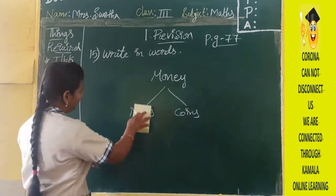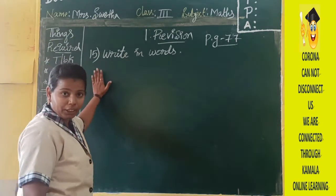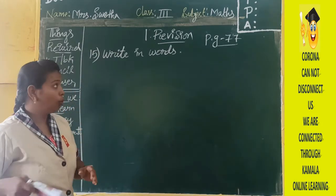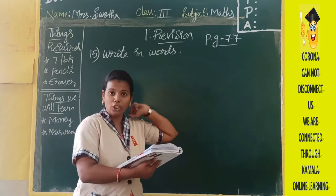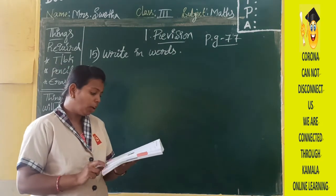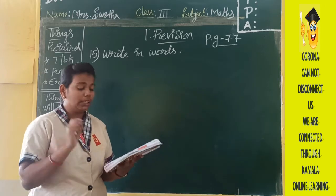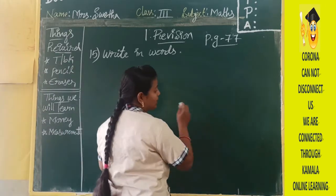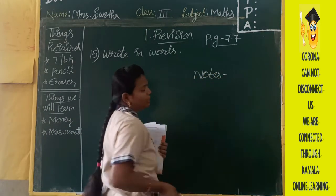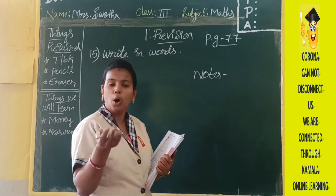Now let us move into the written exercise. Here we are dealing with the 15th bit, which is related to money — that is the reason we discussed about money. Get ready with your page number 77 in your term book. Look into your term book at number 15. Here they are asking: write the following amounts in words.